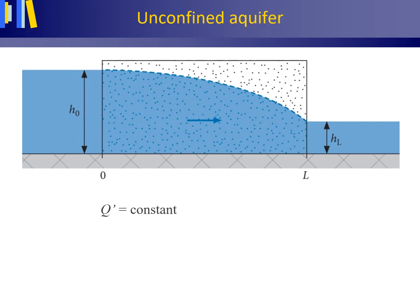The volume flux is constant. Q with a prime, that is Q in square meters per day, is constant. Now we can apply Darcy's law. Q prime equals minus K times the hydraulic head H times the hydraulic gradient dH/dx. We combine this with the continuity equation and obtain this equation.